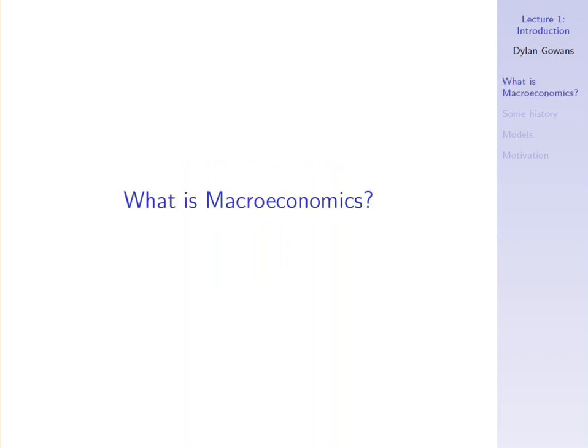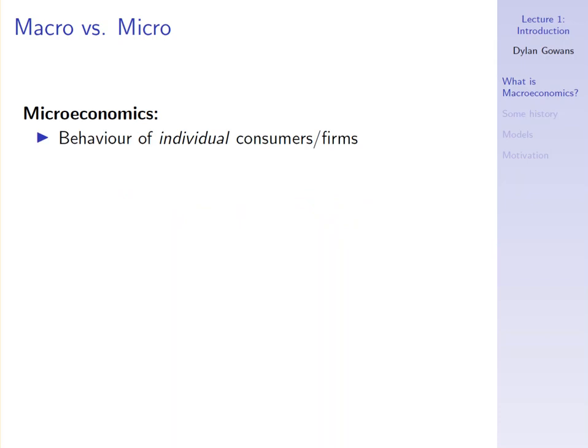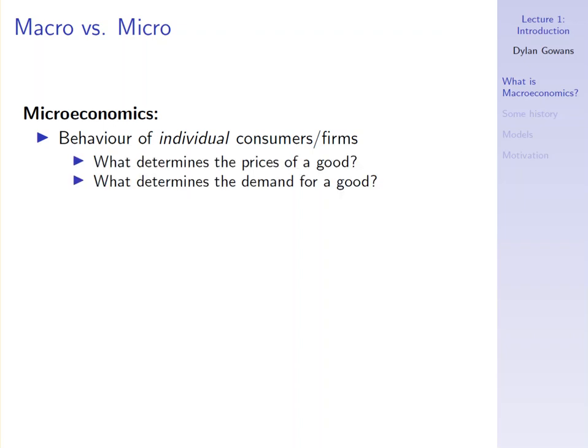So what is macroeconomics? It's easiest to see in contrast to the other major strand of economics, which is microeconomics. Microeconomics is really concerned with the behavior of individual consumers or firms. A microeconomist might ask something like what determines the price of a given good, or what determines the demand for a given good. These are really individual questions related to one small part of an economy. In contrast, macroeconomics is interested in the behavior of economic aggregates — not a single good but economy-wide variables.